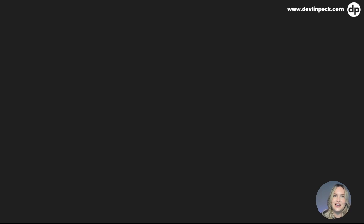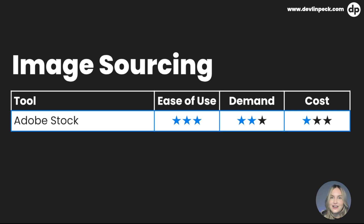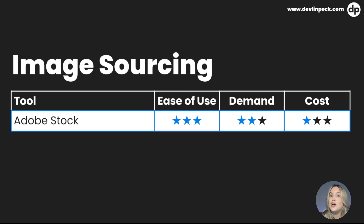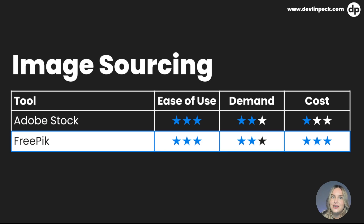Let's get to the next category, which is image sourcing. Image sourcing is generally very easy — you're just looking for images. The first tool is Adobe Stock, which is very easy to use. All image sourcing platforms are similar in that regard. Demand is neutral; you're not really going to see an image sourcing skill on a job description. Cost is generally more expensive than other image sourcing sites, but every Adobe tool we mention after this will be included in an Adobe Creative Cloud subscription. Next is Freepik, which is very easy to use, neutral in demand, and free — it has a free tier that works very well.